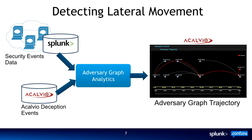How is it done? We take a lot of security events data from Splunk, and we also take the deception events data. We correlate that, do advanced data science and advanced analytics — in this case we are doing graph analytics — and we give insight about adversary lateral movement. This shows the lateral movement of the adversary.